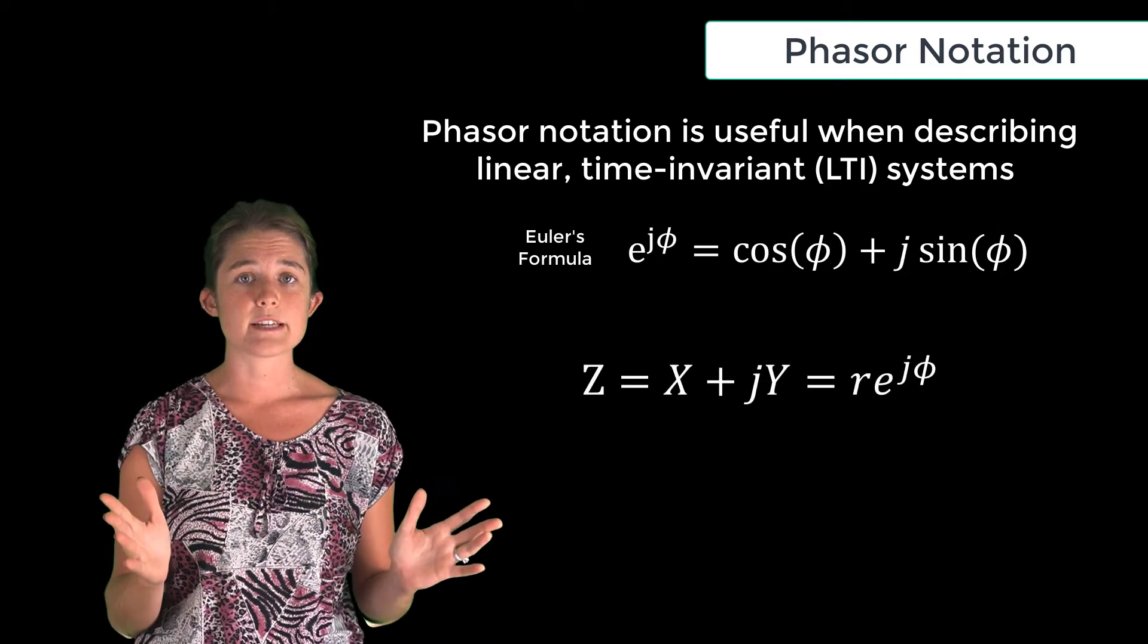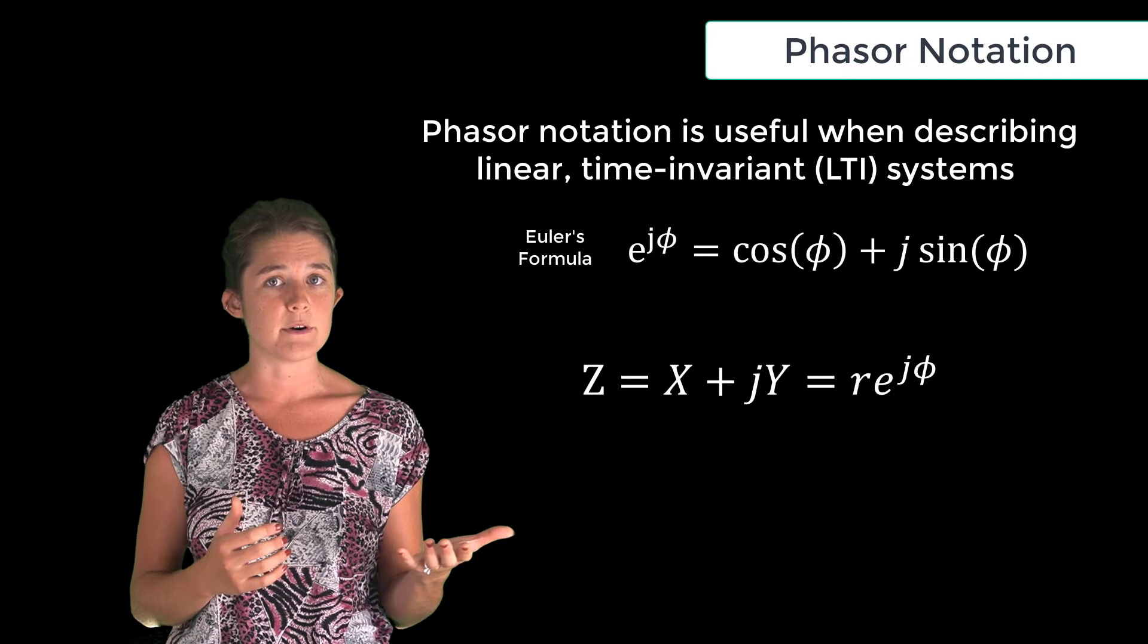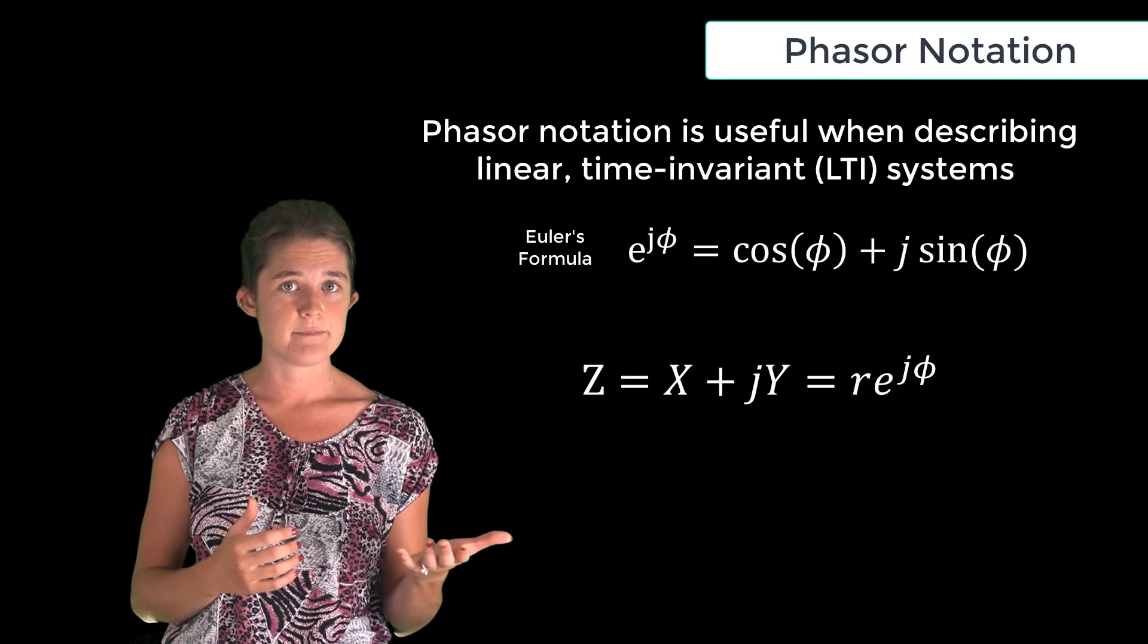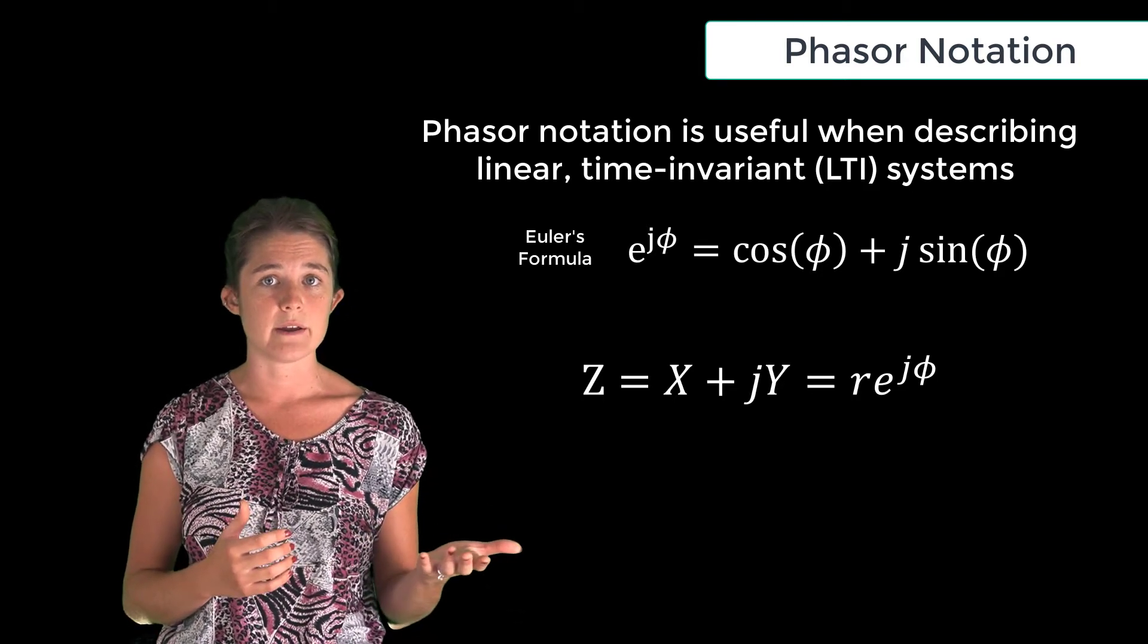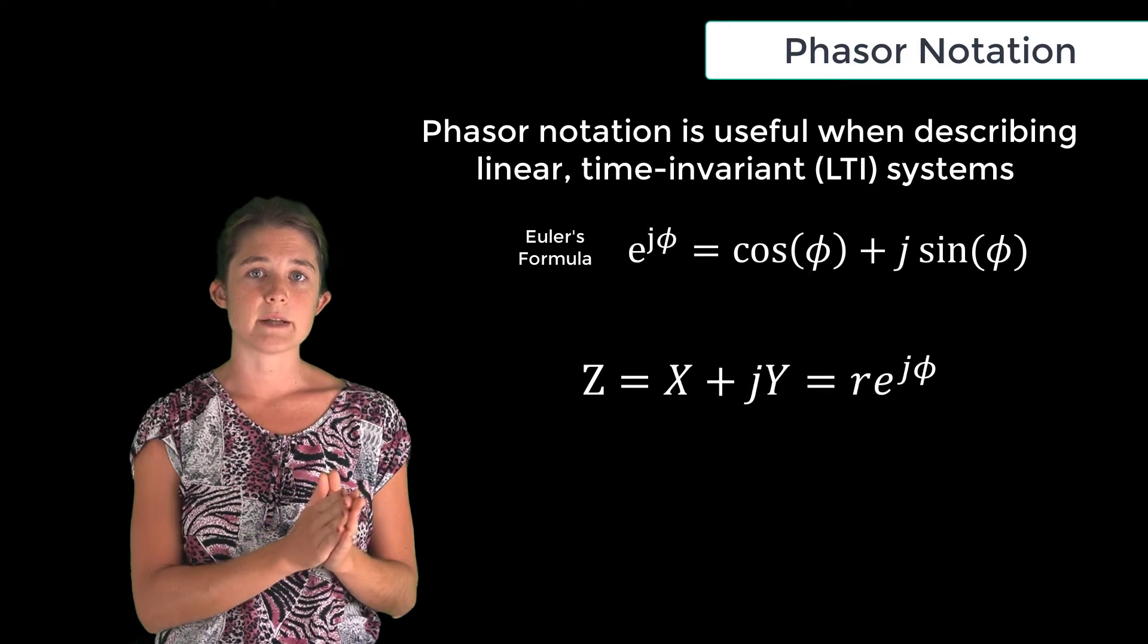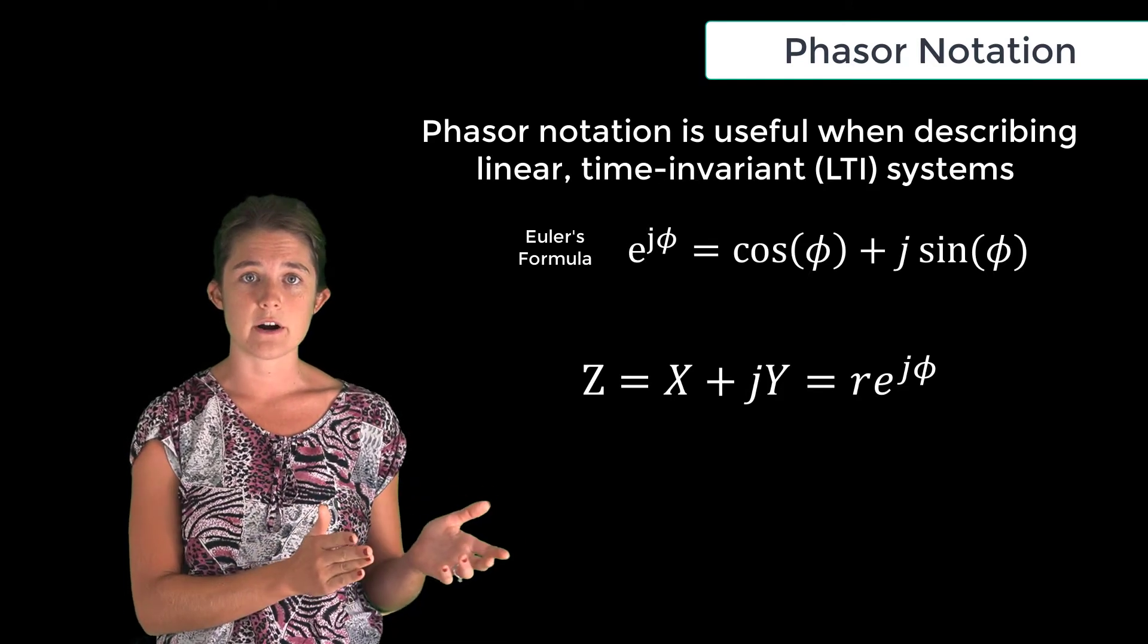Any complex number z may be expressed either as a sum of a real part and an imaginary part, z equals x plus j y, or as a scaled complex exponential z equals r times e to the j phi.